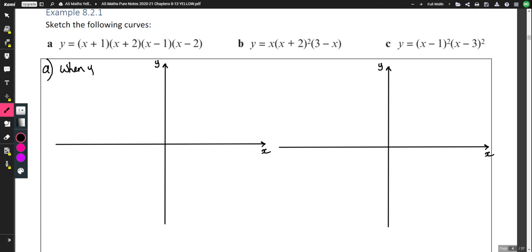So here, when y is 0, what x values would make y equal to 0 here? Well, negative 1 would make the first bracket 0. And if the first bracket is 0, the whole thing is going to be 0. Because if the first bracket was 0, we'd have 0 times anything times anything times anything, which is definitely 0. So the first bracket negative 1, the second bracket negative 2, the third bracket 1, the fourth bracket 2.